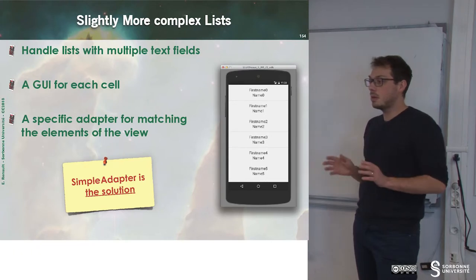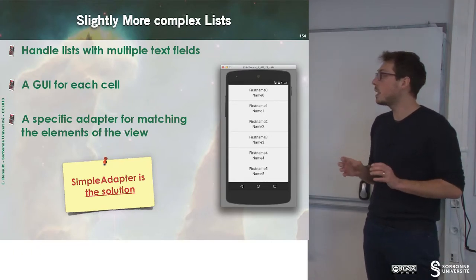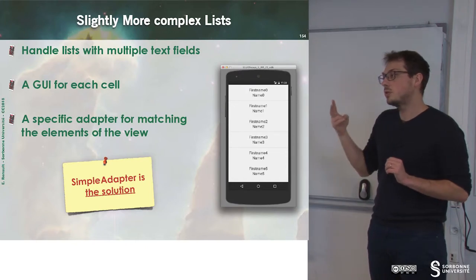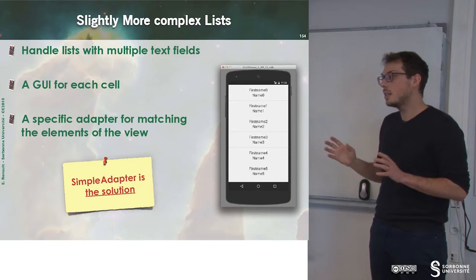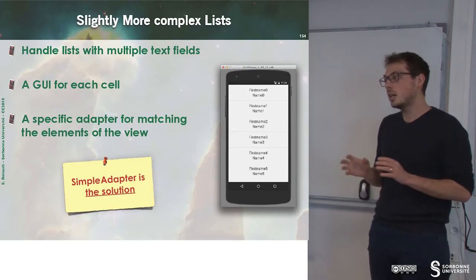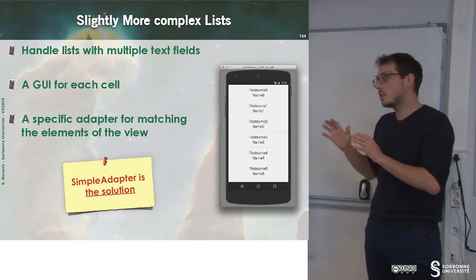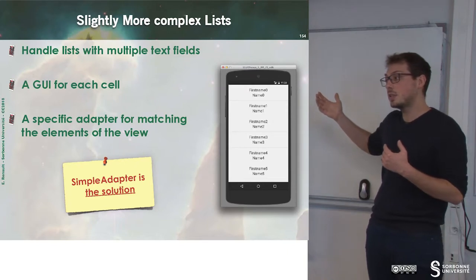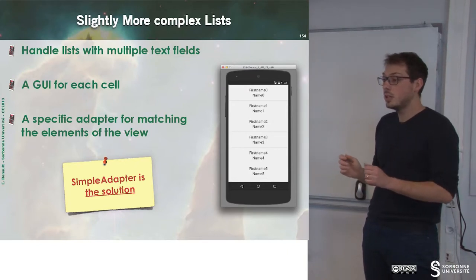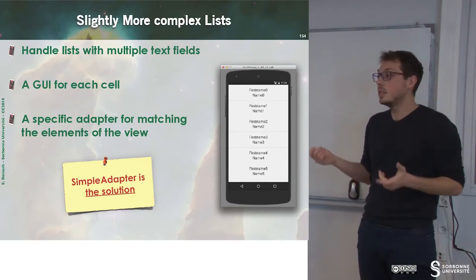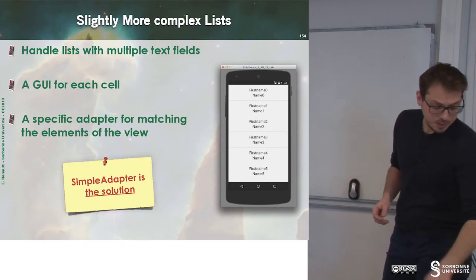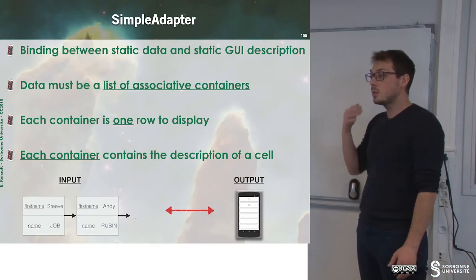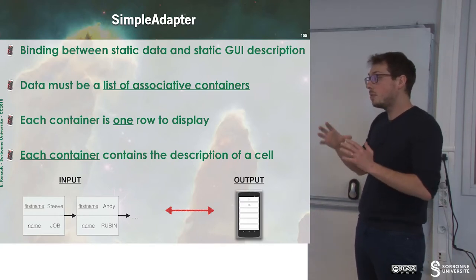Now we may want to build a slightly more complex list — for instance, a list where each row has two fields: first name and name. We have to define a GUI for each cell, and also define our own adapter to reflect this change over the list, because the ArrayAdapter won't know which element is the name and which is the first name. To do that, we use a SimpleAdapter, which is the simplest way to build a UI for each cell.